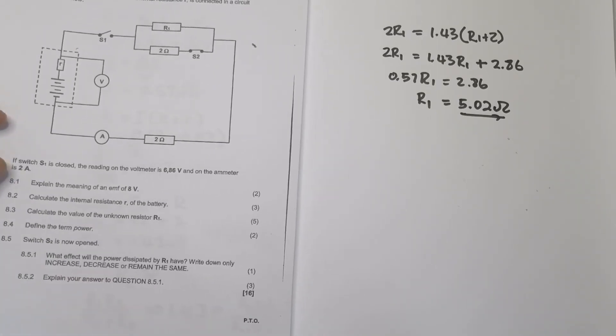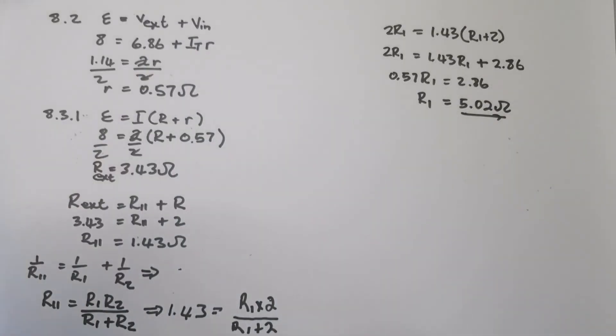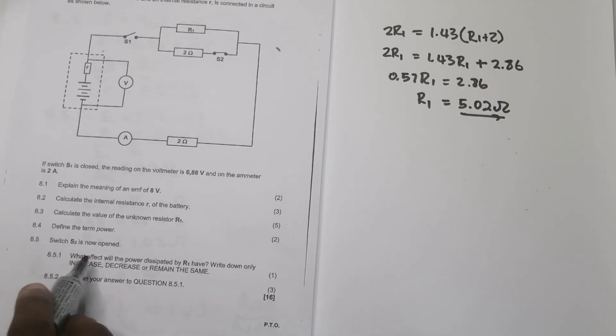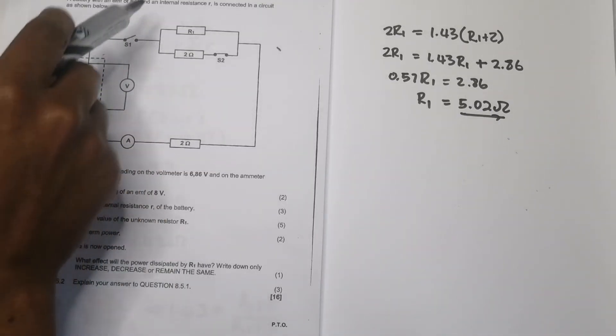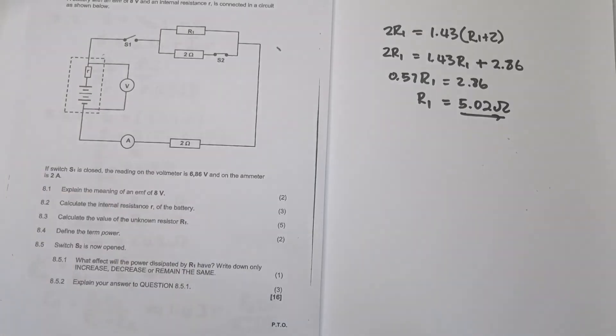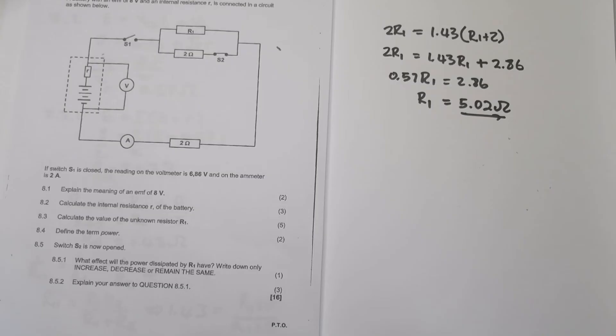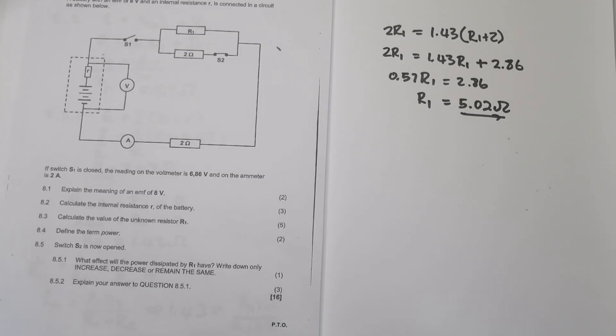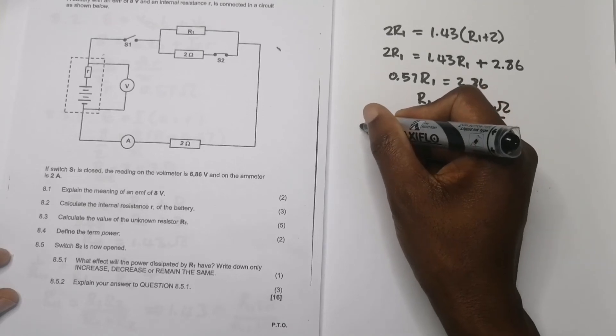They say define the term power. Remember that power is the rate at which work is done. They say now switch 2 is opened. What effect will the power dissipated on R1 have? Write down only increase, decrease or remain the same. If we open switch S2, instead of that current branching there, all of the current would now go through R1. So definitely we should have an increase in the amount of power that is dissipated.